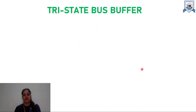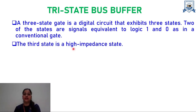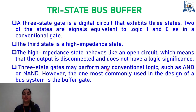What is this tri-state buffer? A three-state gate is a digital circuit that exhibits three states. Two of the states are signals equivalent to logic 1 and 0 as in a conventional gate. The third state is a high-impedance state. This high-impedance state behaves like an open circuit, which means that the output is disconnected and does not have a logic significance. Three-state gates may perform any conventional logic, such as AND or NAND. However, one most commonly used in the design of the bus system is the buffer gate.